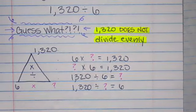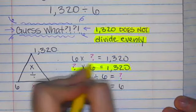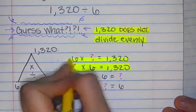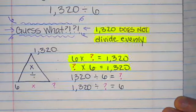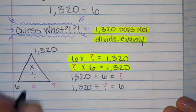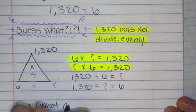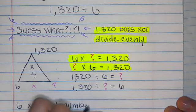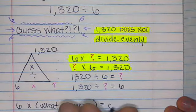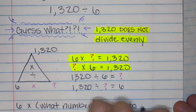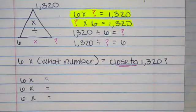I'm going to take my two multiplication problems, flip it around, kind of kick it into reverse and use that to help me find the answer to my division problem. So we're going to say six times what number equals close to, remember we're not going to know exactly, 1,320.